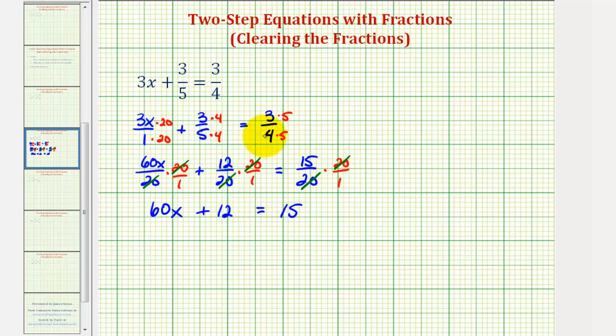Now we have the equation 60x plus 12 equals 15. Remember, in the first step we said building these common denominators is an optional step, which means if we could recognize the least common denominator would be 20, we can multiply each term in the original equation by 20, and the result would be the same equation.